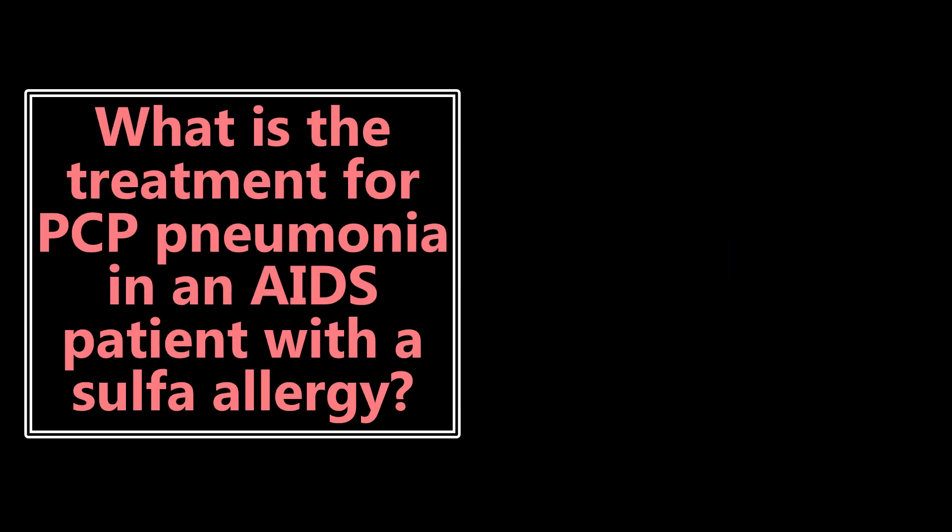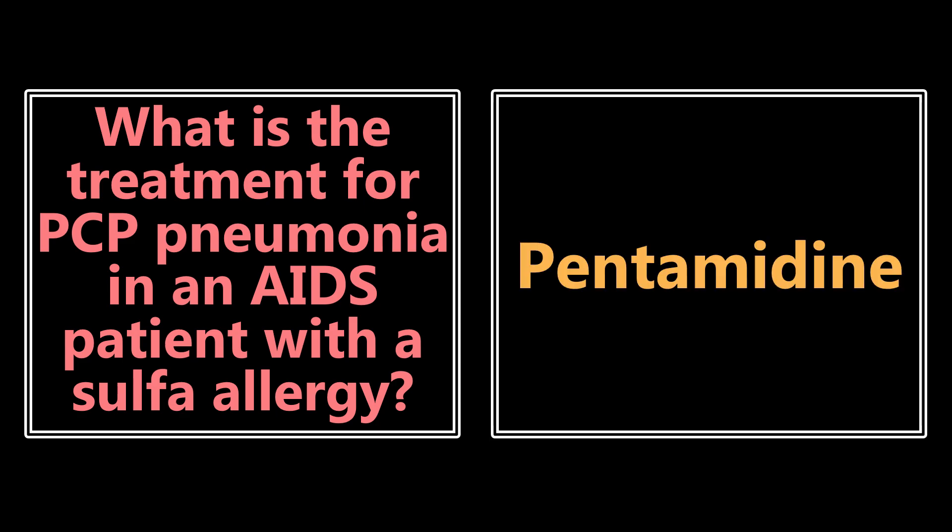What is the treatment for PCP or PJP pneumonia in an AIDS patient with a sulfa allergy? This is a second-order question — the primary treatments can't be used because the patient has a sulfa allergy. In most cases the answer is going to be pentamidine. If you have a patient with AIDS, PCP pneumonia, and a sulfa allergy, use pentamidine. Also important: the most common side effect of pentamidine is hypoglycemia.